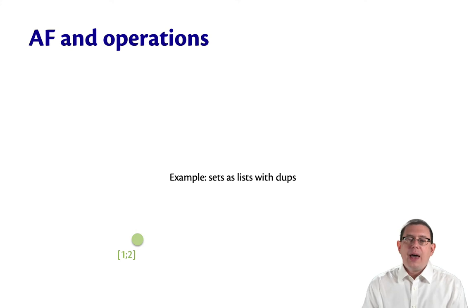For example, imagine we were working with sets that are represented as lists and have duplicates allowed. So we could start off with the concrete value [1,2], which is a list.